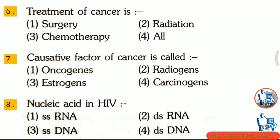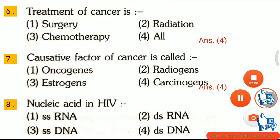Question 6: Treatment of cancer includes — first, surgery; second, radiation; third, chemotherapy; fourth, all. The correct answer is option 4: all. Question 7: The causative factor of cancer is called — first, oncogen; second, radiogen; third, estrogens; fourth, carcinogen. The correct answer is option 4: carcinogen.